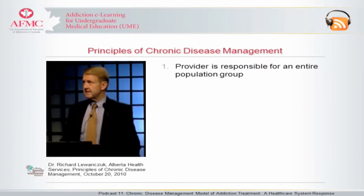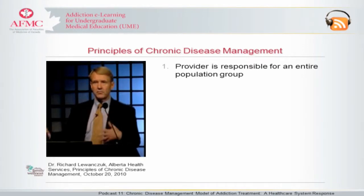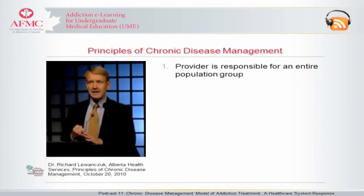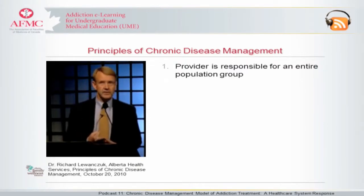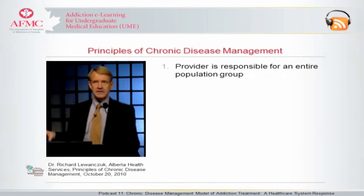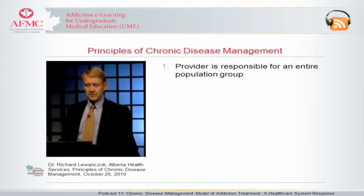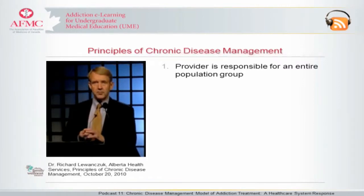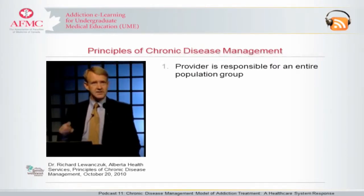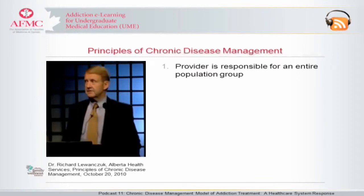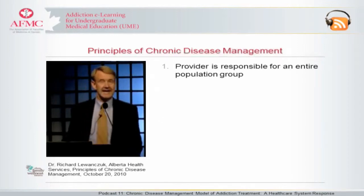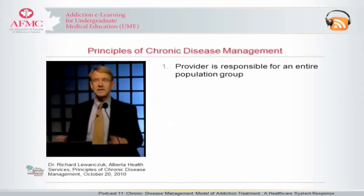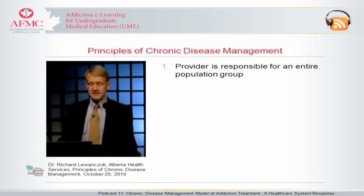One of the first principles of chronic disease management is that a provider or provider group — whether it's an individual practitioner, a practice, a clinic, a primary care network in Alberta, a health zone, or an entire province — is responsible for the entire population. Not just the people that show up in the office or those seeking care, but everybody. This implies that we have to go and find people who otherwise wouldn't be seeking care, can't seek care, are unable, or don't know. We need to have those sorts of structures and processes in place.